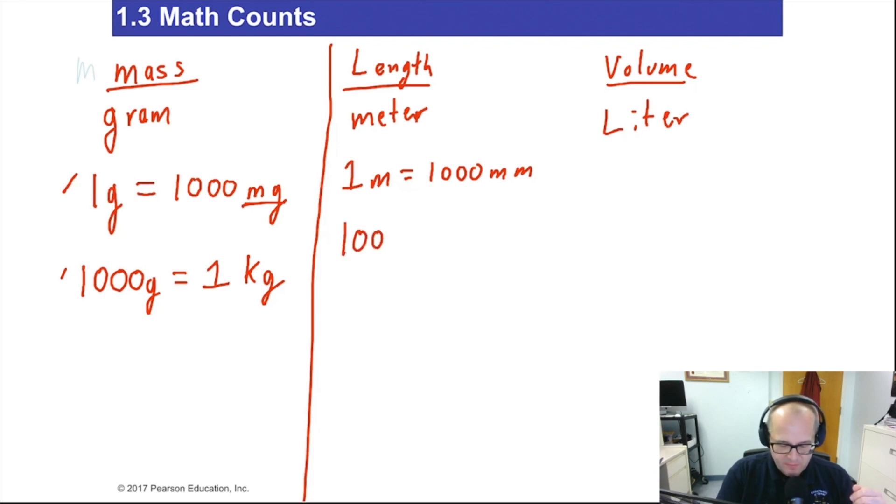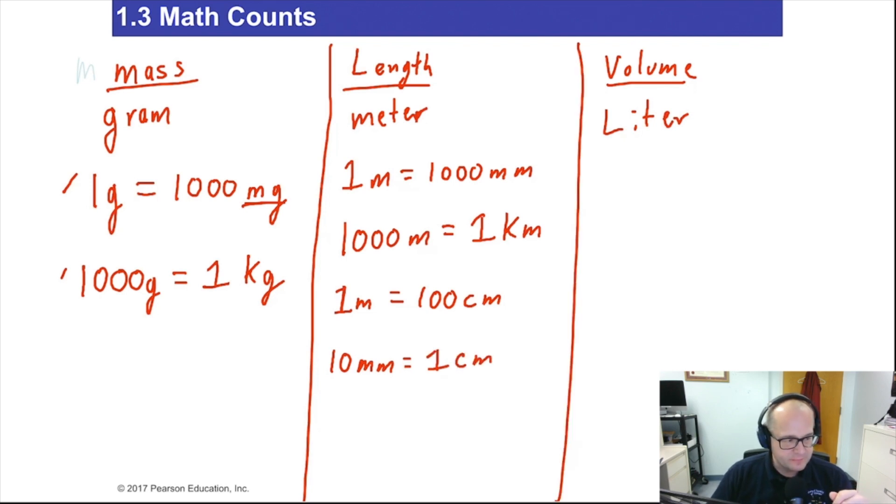1000 of the base unit meters equals one kilometer. And if you want, we can also do one meter equals 100 centimeters. And there's another one we can throw out here. 10 millimeters equals one centimeter. And these are the common equalities for length. There are other ones, but these are the ones that are most commonly used.